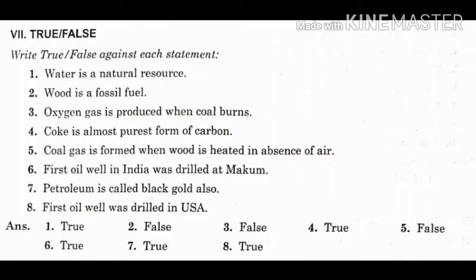True or false. Write true or false against each statement. First one, water is a natural resource. The statement is true. Second one, wood is a fossil fuel. The statement is false. Third one, oxygen gas is produced when coal burns. The statement is false.